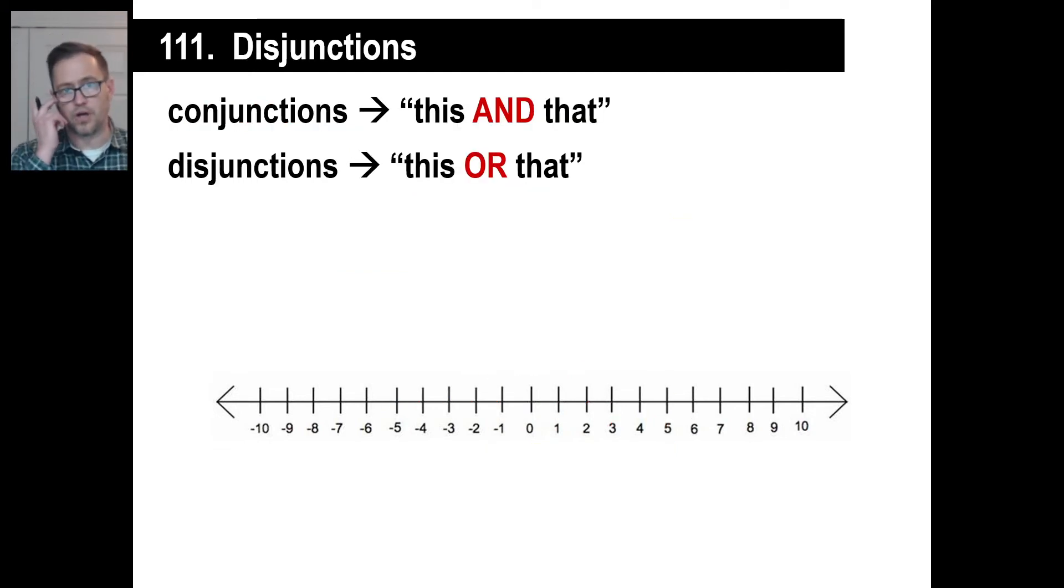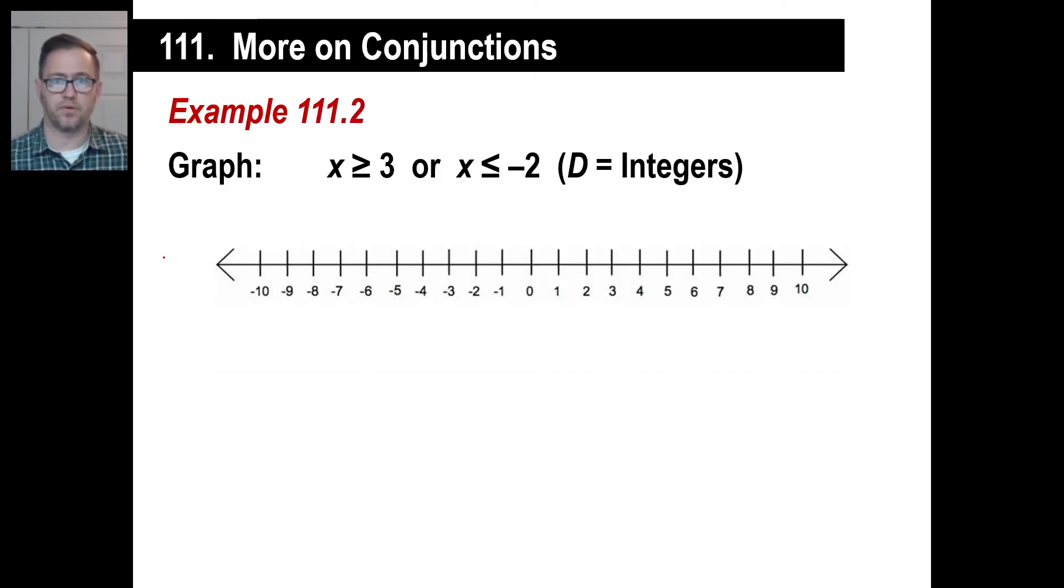Okay, all right, a disjunction is different from a conjunction. A conjunction means this and that, like the ones we just did. It has to match both of those inequality parameters. The disjunction, it's both of them. It can be either one of them. So you're going to have disjointed kind of looking graphs when you do these kind of things.